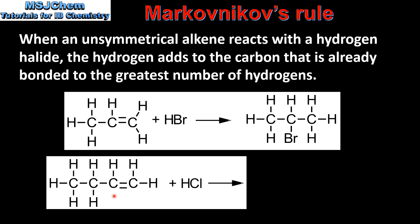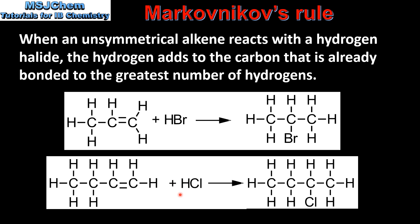In this reaction we have but-1-ene reacting with hydrogen chloride. Using Markovnikov's rule we can predict the major product: the hydrogen atom bonds to the carbon that's already bonded to the greatest number of hydrogens. So the major product is 2-chlorobutane.